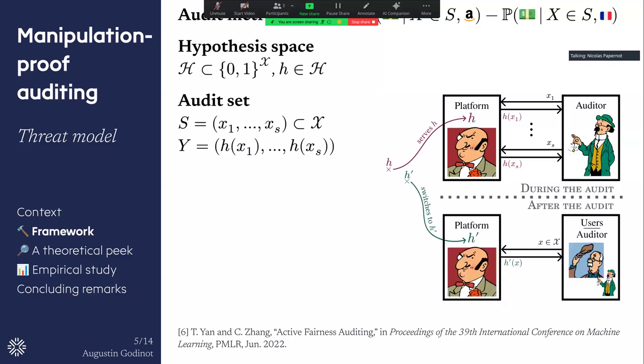So during the audit, the auditor saw a model H, which is very fair, even though it's a little bit less accurate. And then after the audit, the platform switches to another model that is far more accurate at the price of fairness, for example. And the whole goal of this robust auditing thing is to bound the difference in the parity metric between the old and the new model here, the old model H that we saw during the audit and the new model that is implemented after the audit.